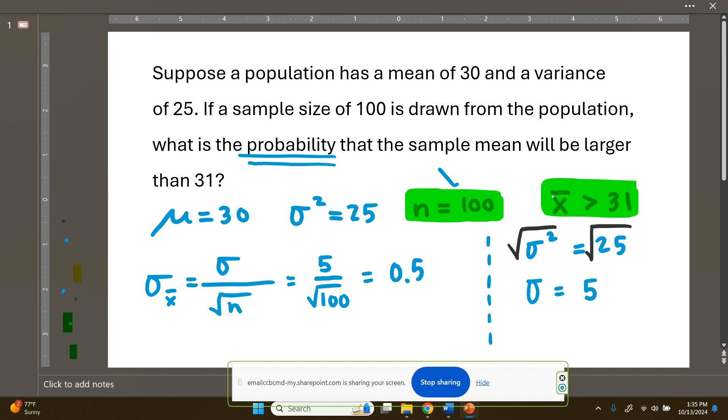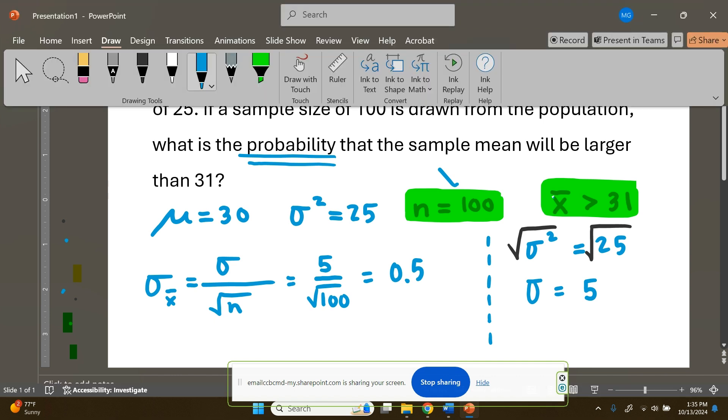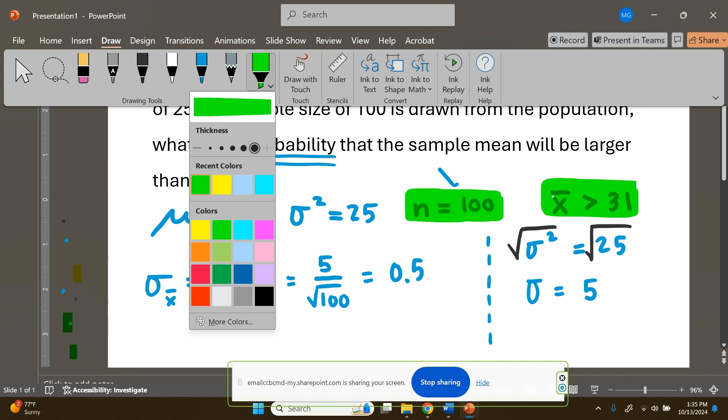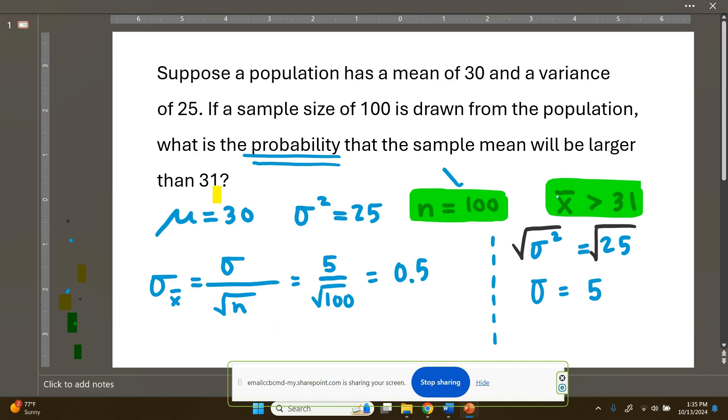So this here, let's make an emphasis. This is the standard deviation we're going to use when we go visit the normal calculator, this 0.5, the one that's been converted to the right size given that they're using a sample size of 100.